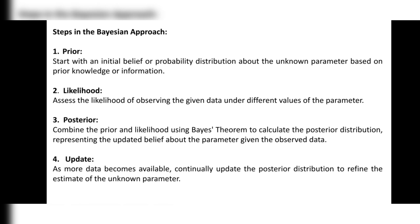By having some knowledge we can estimate the unknown data, and check whether it is correct or not using Bayes' theorem. After these three steps, as more data becomes available, we continually update the posterior distribution to refine the estimate of the unknown parameter. If we get the correct answer, our knowledge is right; if not, we continue updating the data in the posterior step.